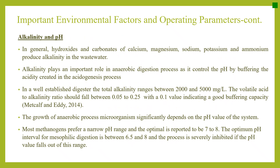Alkalinity and pH. Hydroxides and carbonates of calcium, magnesium, sodium, potassium, and ammonium produce alkalinity in wastewater. Alkalinity plays an important role in anaerobic digestion as it controls pH by buffering the acidity created in the acidogenesis phase. In a well-established digester, total alkalinity ranges between 2000 and 5000 mg/L. The volatile acid to alkalinity ratio should fall between 0.05 and 0.25, with 0.1 indicating good buffering capacity. Most methanogens prefer a narrow pH range with an optimum of 7 to 8. The optimum pH for mesophilic digestion is 6.5 to 8, and the process is severely inhibited outside this range.